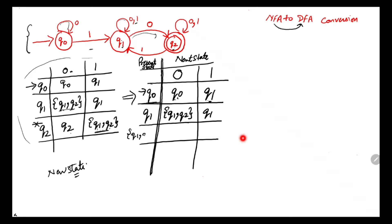Students normally make a mistake here: they write transitions only for q2 but not q1, saying q1 has already appeared. But no — we consider {q1, q2} as a single state. q1 has already appeared as an old state, but {q1, q2} has not yet appeared in the present state column, so we consider this as a new state.